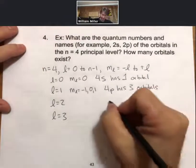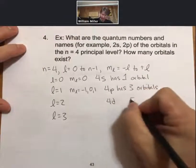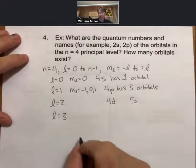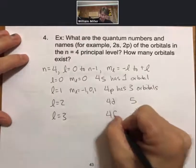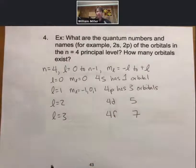Continuing on, 4d has 5 orbitals, and 4f has 7 orbitals. And if you look at some of the previous pages, you can show that.